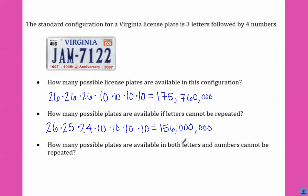What if we couldn't repeat the letters or the numbers? So we already know the letters will be 26 times 25 times 24. For the numbers, it would be 10 times 9 times 8 times 7, which would be 78,624,000 options for the license plates.